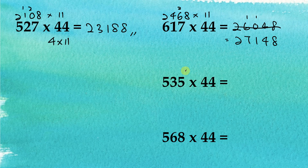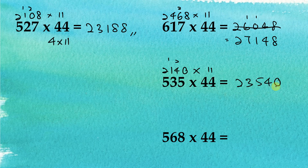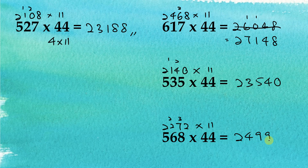For 535 multiplied by 4: 4 times 5 is 20, 4 times 3 is 12 plus 2 is 14, and 4 times 5 is 20 plus 1 is 21, giving 2140. Then 2140 multiplied by 11: the first digit is 2, followed by 3, then 5, then 4, and the last is 0, giving 23540. For 568 multiplied by 4: 4 times 8 is 32, 4 times 6 is 24 plus 3 is 27, and 4 times 5 is 20 plus 2 is 22, giving 2272. Then 2272 multiplied by 11 gives 24992.